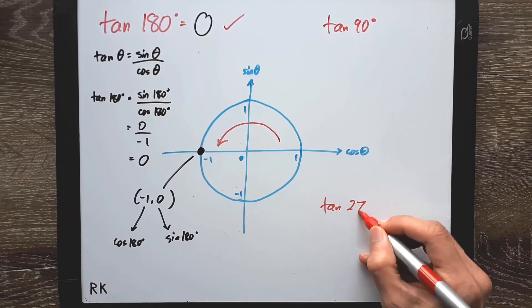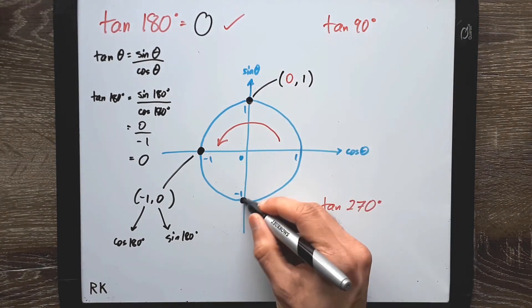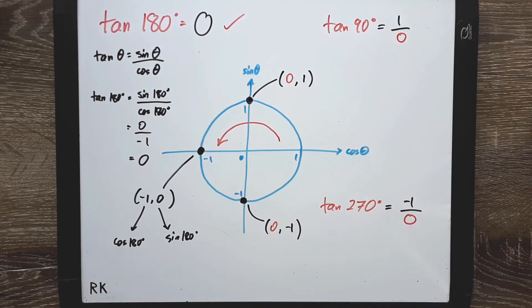Bear in mind that if you're finding tangent 90 or tangent 270, both points on the circle have an x value of 0. So both cases would divide by 0, making them undefined.